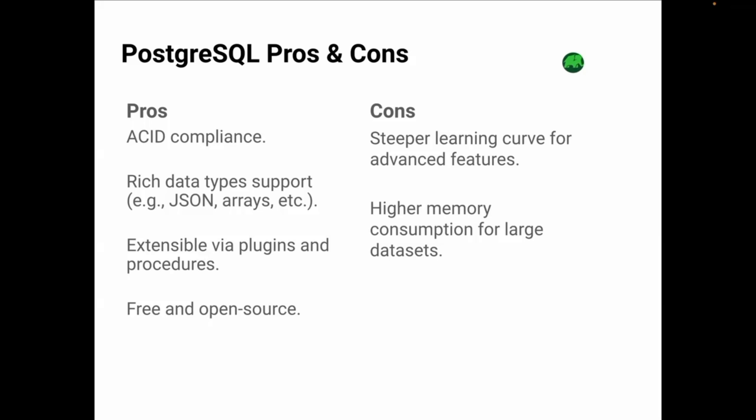PostgreSQL is ACID compliant, meaning it guarantees transaction reliability — no need to worry about data integrity. It also supports a rich variety of data types like JSON, arrays, and custom types, allowing you to work with both structured and unstructured data efficiently. Another great feature is its extensibility — PostgreSQL allows you to extend its capabilities with plugins, functions, and custom procedures. Being open source and free is another huge plus.